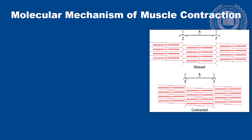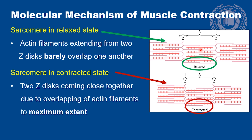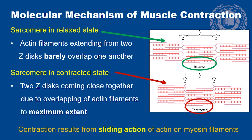Coming to the molecular mechanism of skeletal muscle contractions, these diagrams demonstrate the basic mechanism of muscle contraction. The upper diagram shows the sarcomere in relaxed state where the actin filaments extending from two Z-discs barely overlap one another, and the lower diagram shows sarcomere in contracted state. As you can see, the two Z-discs are coming close to each other due to overlapping of actin filaments to maximum extent and shortening the sarcomere. Contraction results from sliding action of actin filaments among the myosin filaments.